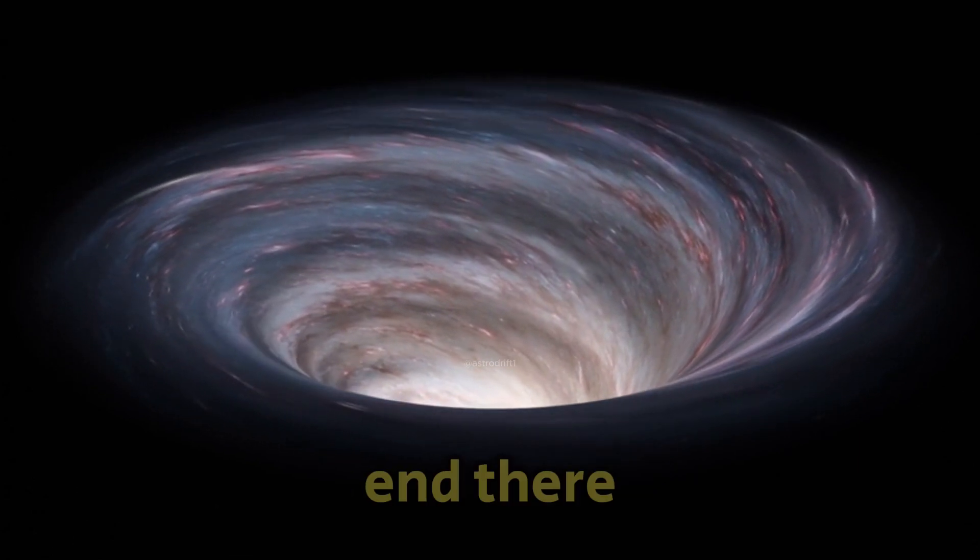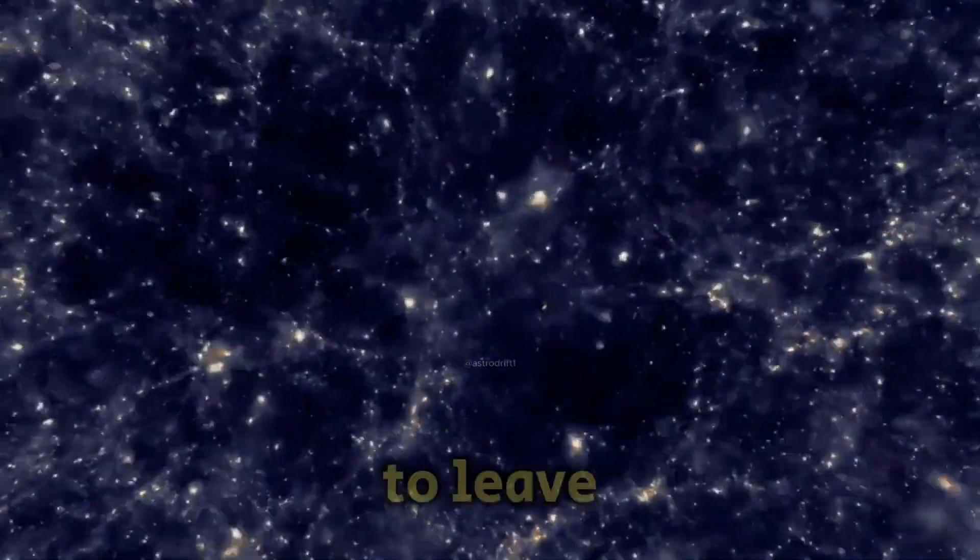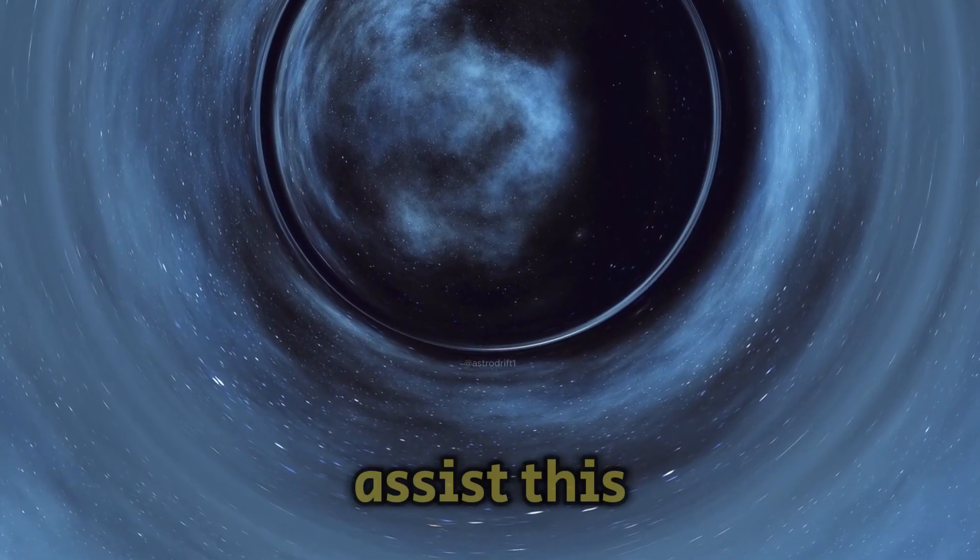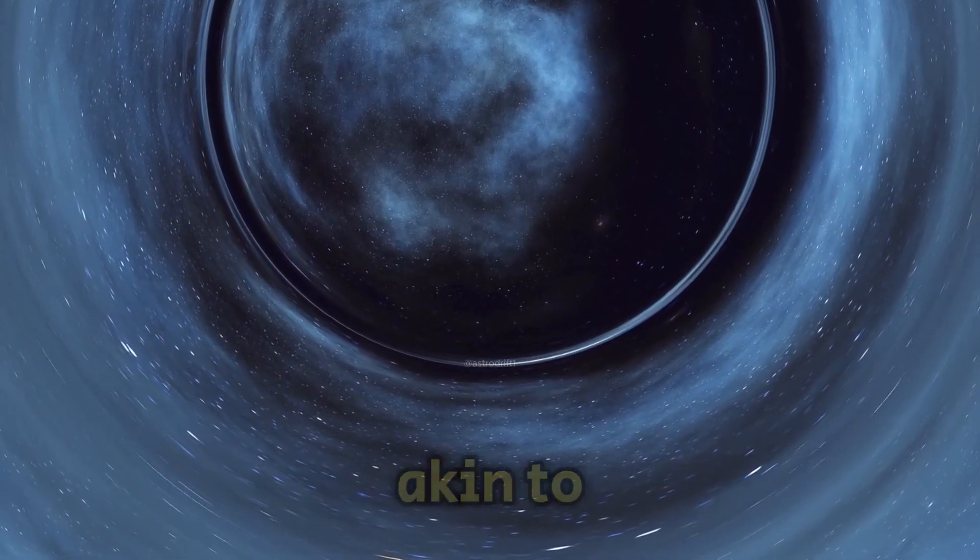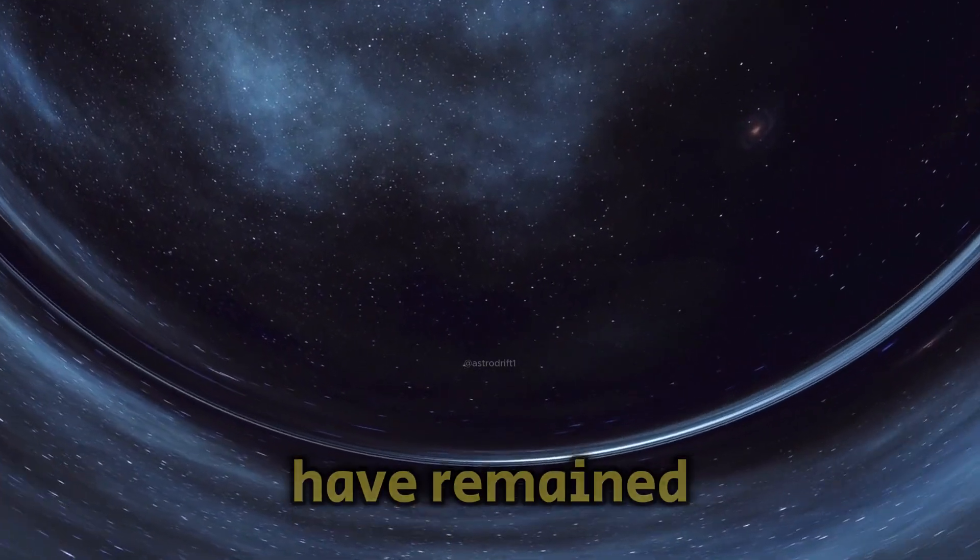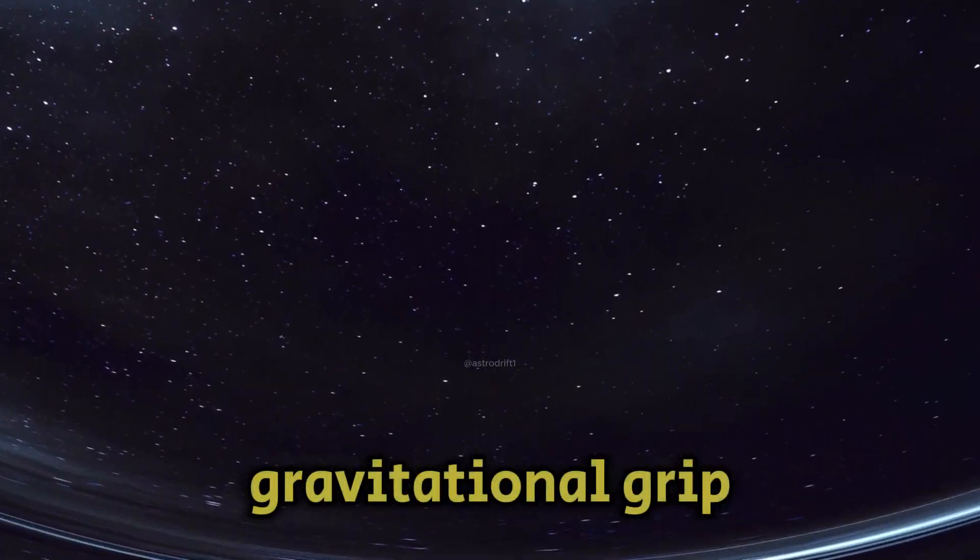But the story doesn't end there. As the Voyagers prepared to leave Jupiter, they received a crucial farewell gift: a gravity assist. This gravitational boost, akin to a cosmic slingshot, propelled them towards Saturn. Without it, they would have remained trapped in the Sun's gravitational grip, unable to venture further into space.